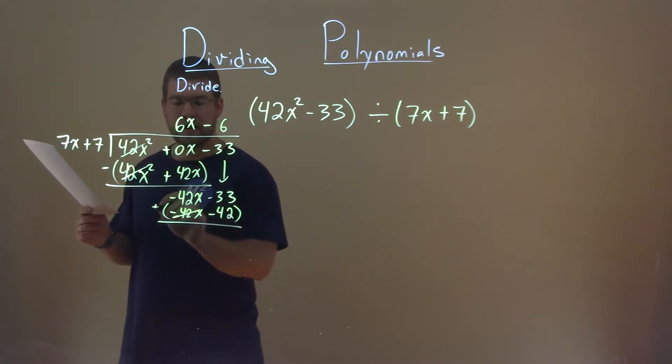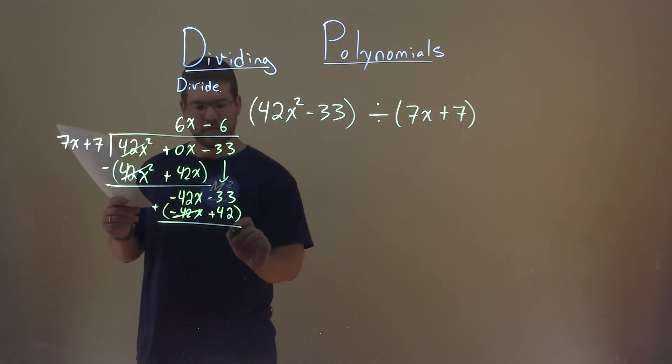Negative 33 minus a negative, like adding a positive, 42. Negative 33 plus 42 is a positive 9, and that is our remainder.